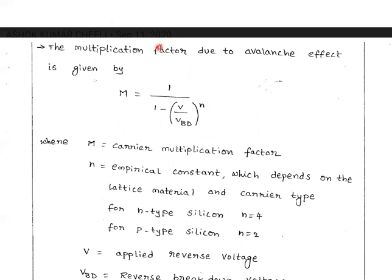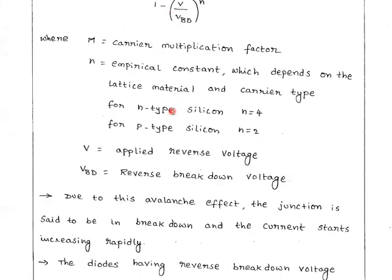The multiplication factor M is equal to 1 divided by (1 minus V divided by Vbd) raised to the power n.